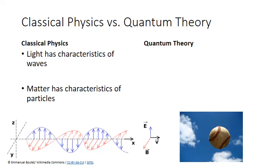This is very different from the way we consider matter to behave. Matter, like the baseball depicted here, behaves as particles. Particles travel in very distinct, defined trajectories. When particles collide with each other, they bounce off or change the angle of trajectory, and they transfer energy from one substance to another through collisions. In contrast to this classical physics distinction between light and matter, quantum theory indicates that the two don't behave quite as differently as we thought.